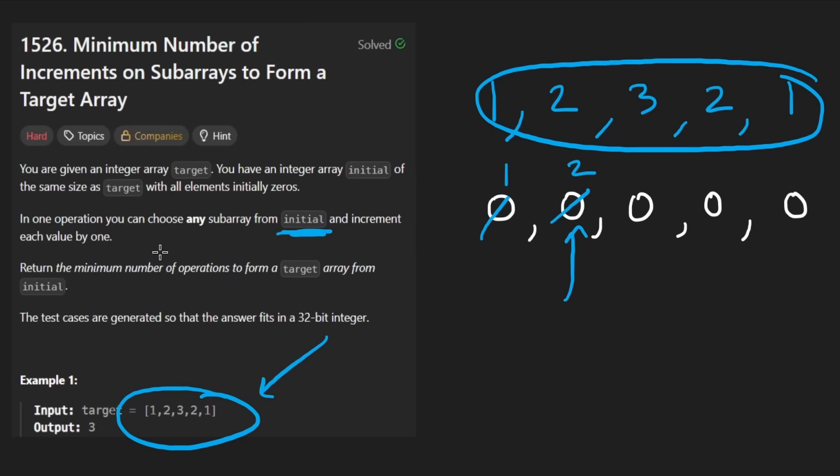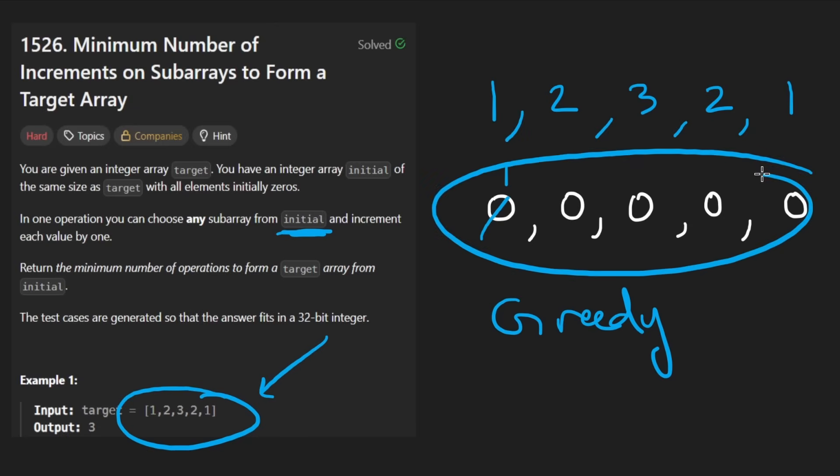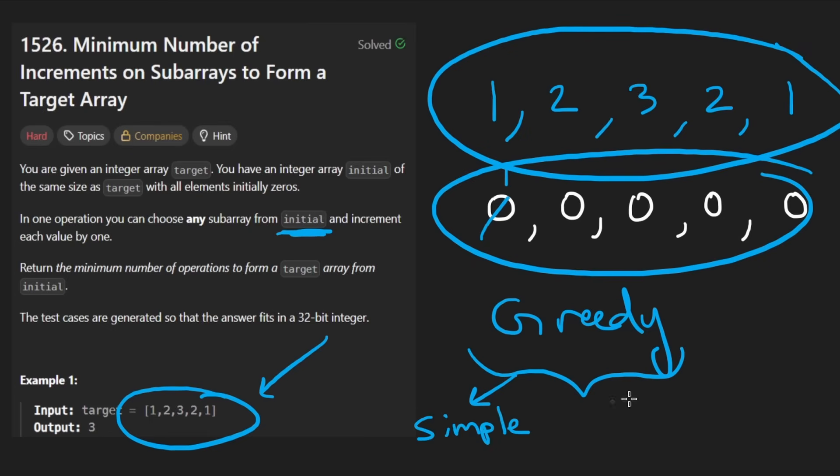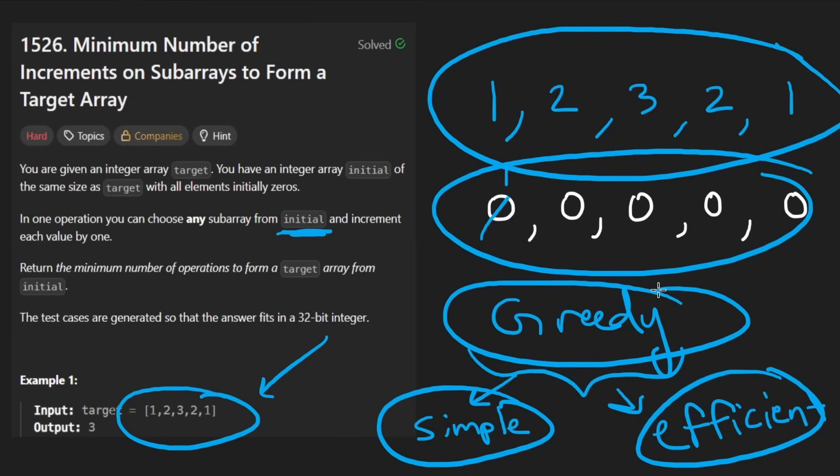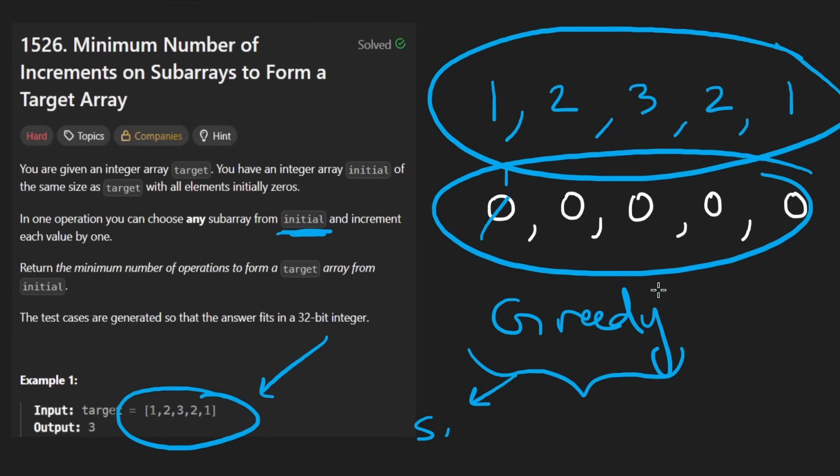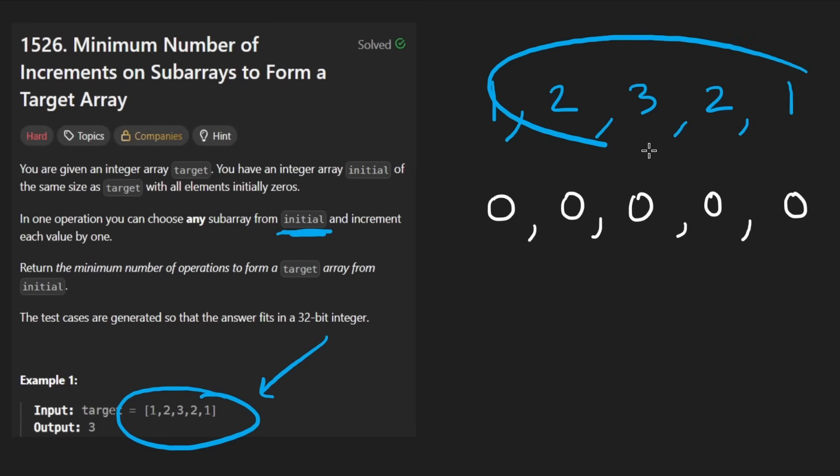So there's many ways for us to take this and form the target array, but we want to return the minimum number of operations to do that. And it's guaranteed that we would be able to do that because the most naive way would be this, like pick this element. How many increments do we have to do? Just a single one. That's one operation.